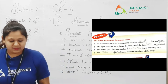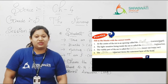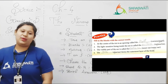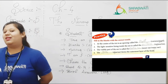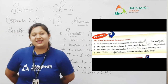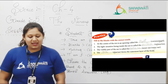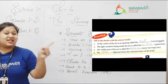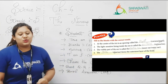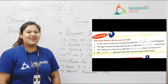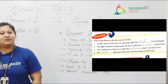Number 1: At the center of the iris is an opening called the blank. Iris ke andar jo small opening hota hai, hum usko kya bolenge — cornea ya pupil? Pupil. Yes, if you said pupil, your answer is correct. Write down pupil. Number 2: The light-sensitive lining inside the eye is called the blank. That sensitive red part of the eye — retina. Write down retina.